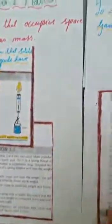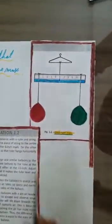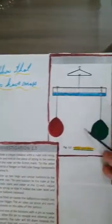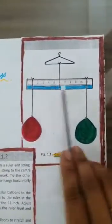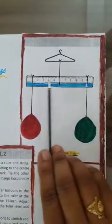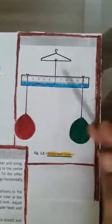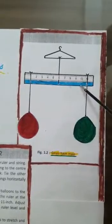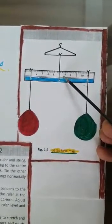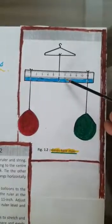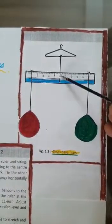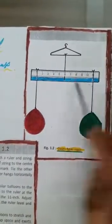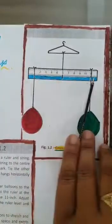Now let us perform the second activity which shows that gases have mass. See this figure, children. Make a simple balance. How you will make a simple balance? Take a ruler. These are the threads. This is a hanger. Take a ruler and a string. Tie one end of the piece of string to the center, that is at near about 6 inch mark. Tie the other end to the hanger so that the ruler hangs horizontally.